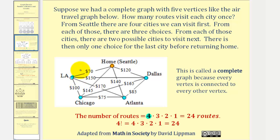Notice once we make a selection, as an example, let's say LA, notice how now there are three choices. In this case, Chicago, Atlanta, or Dallas. Because there are three choices, the next factor is going to be three.